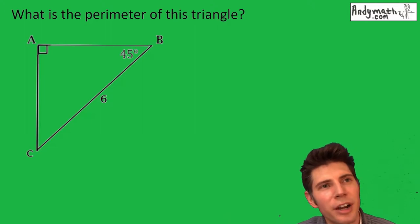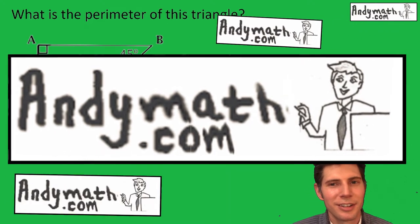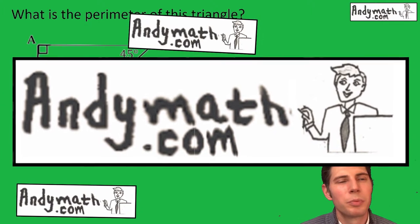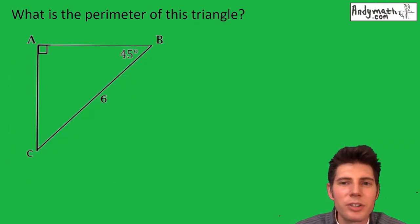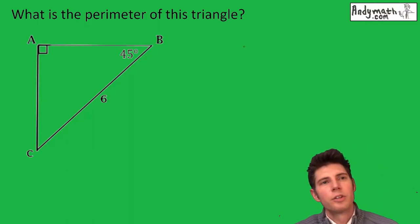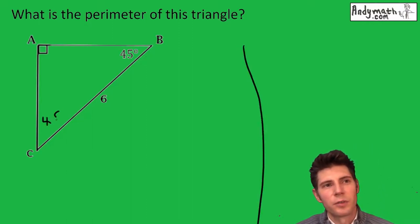Hey guys, welcome to this triangle perimeter video. What is the perimeter of this triangle? It's a 45-45-90 triangle with a hypotenuse of six. There's two ways to do this. First way is recognizing this is 45-45, which would mean both of these are equal to each other, and then we can just do Pythagorean theorem.